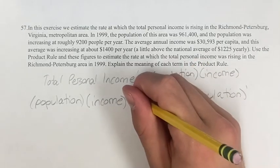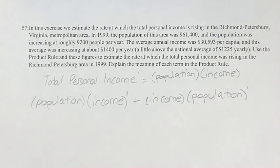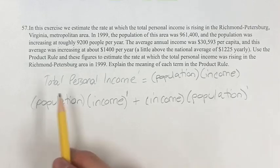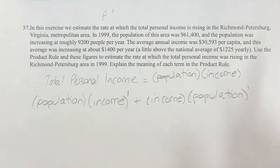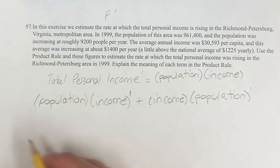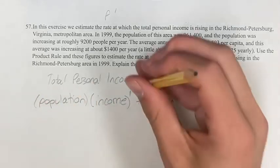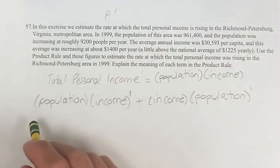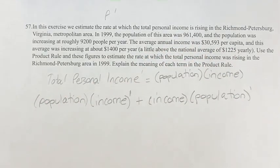I'm using apostrophes here in sort of the f-prime sense, because we don't actually have any variables here. And so this is going to be the rate of change of the total personal income.